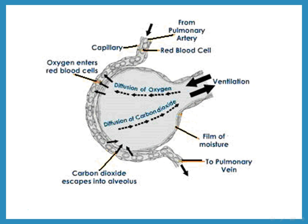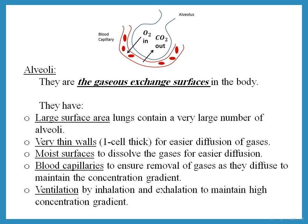Carbon dioxide diffuses out of the blood into the alveoli. The alveoli are lined with a film of moisture, and there is continuous exchange of oxygen and carbon dioxide between air and blood — this is why the alveoli are called the gaseous exchange surfaces. Once oxygen enters the blood and carbon dioxide diffuses out, the blood returns to the heart through the pulmonary vein as oxygenated blood, to be pumped to all parts of the body.